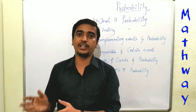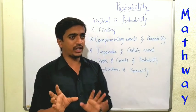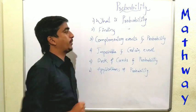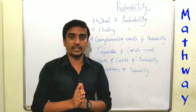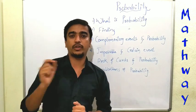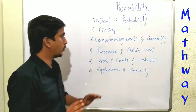So this is probability. For finding the probability, we use a formula: probability of an event is number of favorable outcomes by total number of outcomes. This is the formula we use for probability.